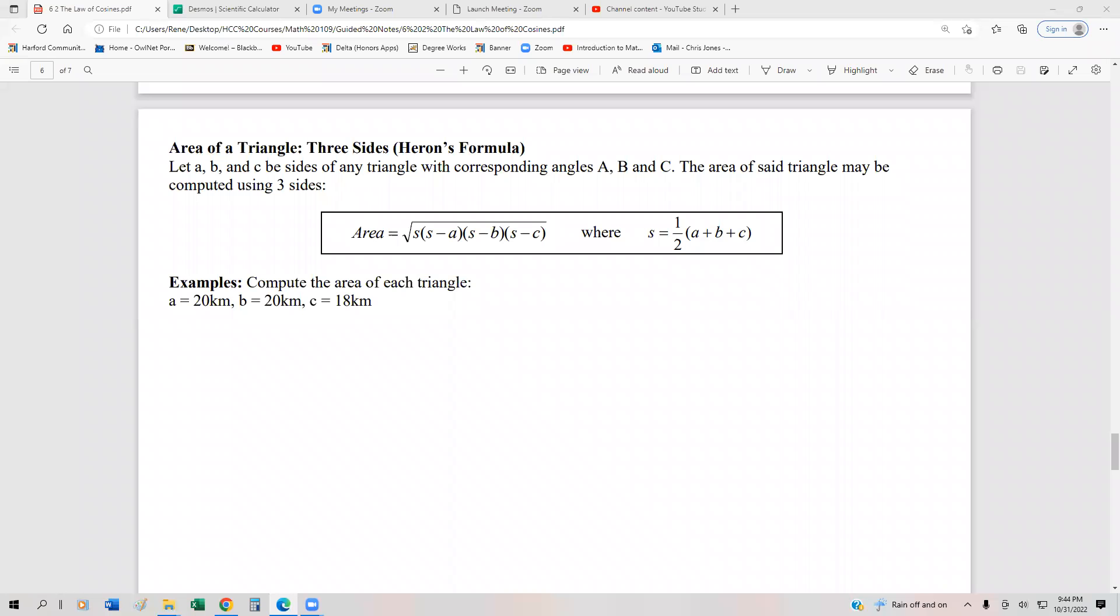In this final video for the law of cosines, we're going to take a look at something called Heron's formula. Heron's formula can be utilized to find the area of a triangle given three sides of that triangle.